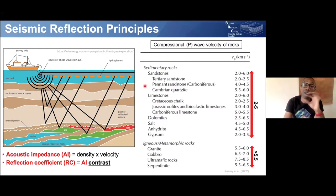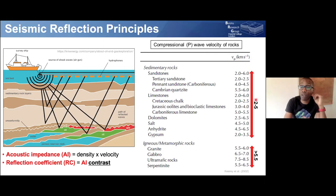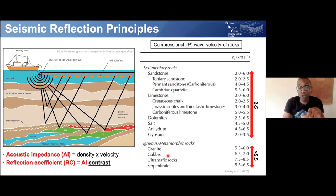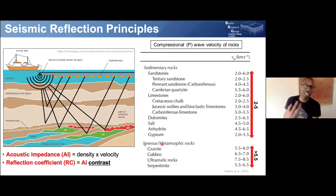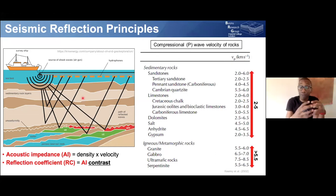The velocity at which sound waves travel through rocks varies as a function of rock type. Sedimentary rocks have P-wave velocities of about two to five kilometres per second, whereas igneous and metamorphic rock types have much faster velocities above five and a half kilometres per second. This difference arises because igneous and metamorphic rocks are crystalline with no pore spaces, so sound waves travel very efficiently. Sedimentary rocks are porous, so some energy is lost within the pore space, making them slower at transporting sound.